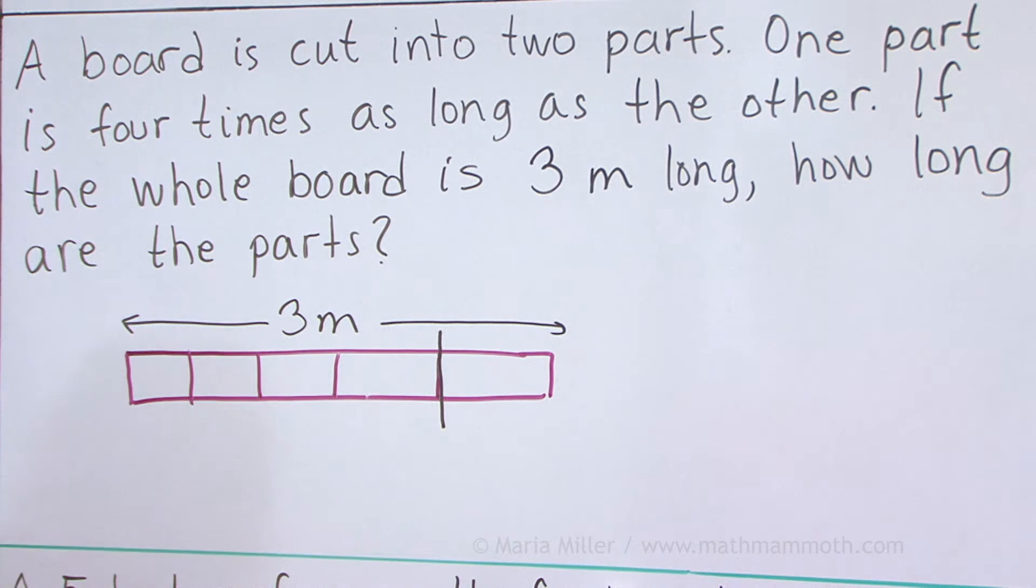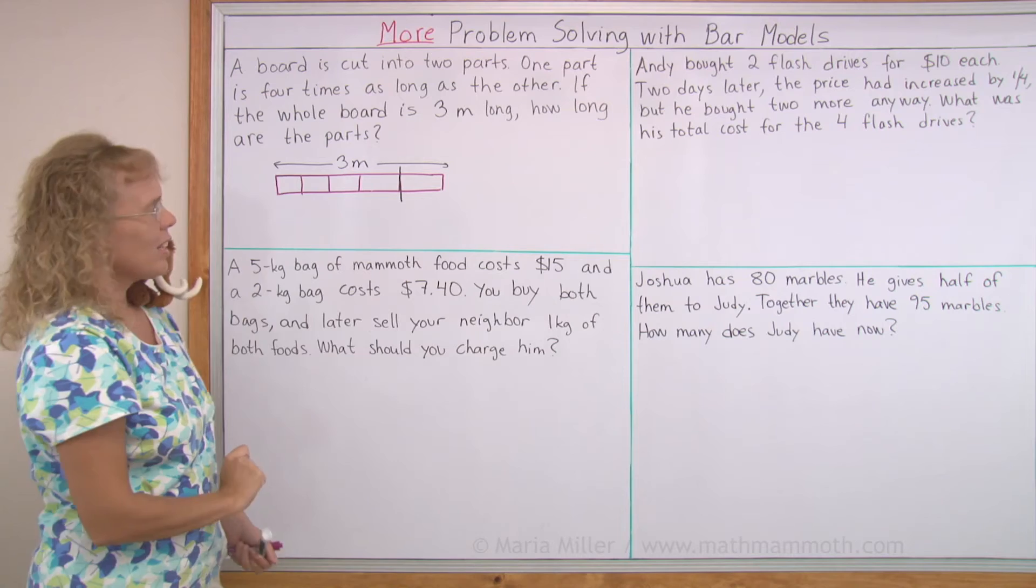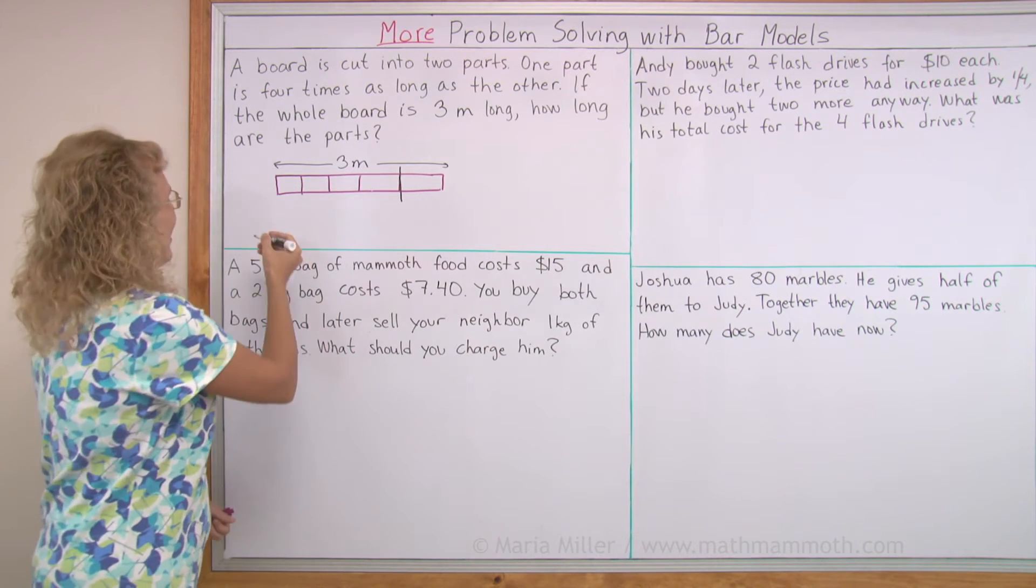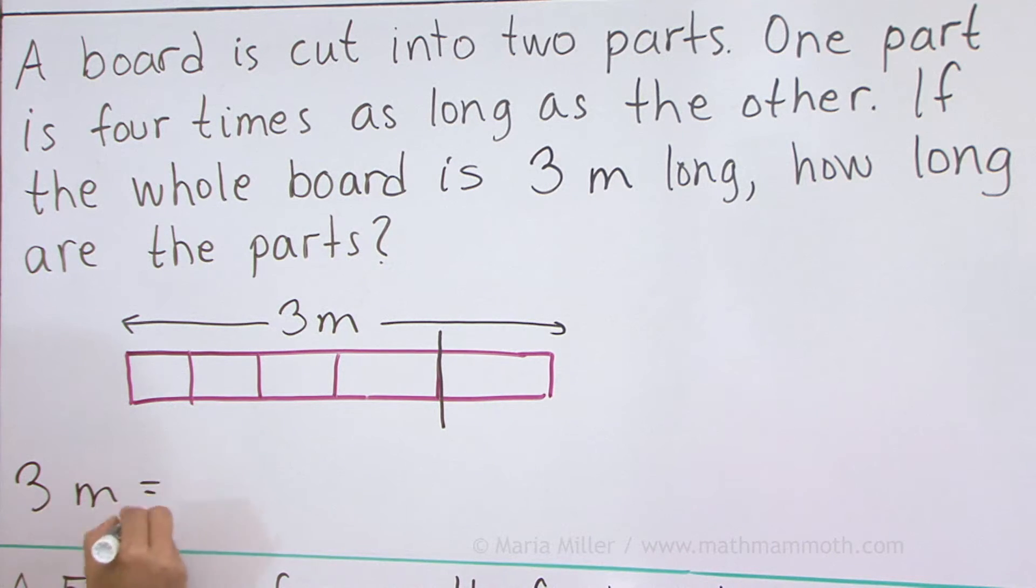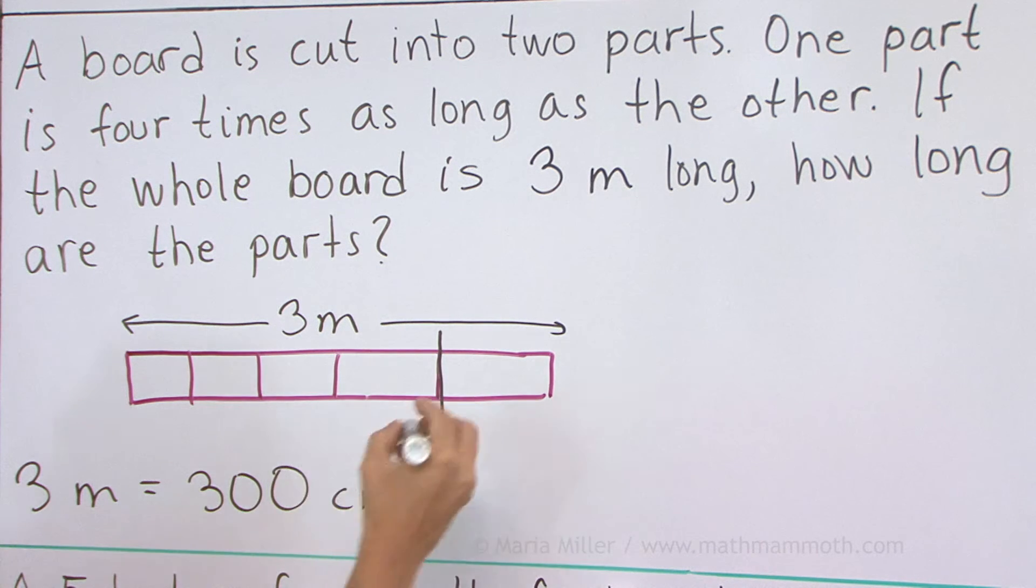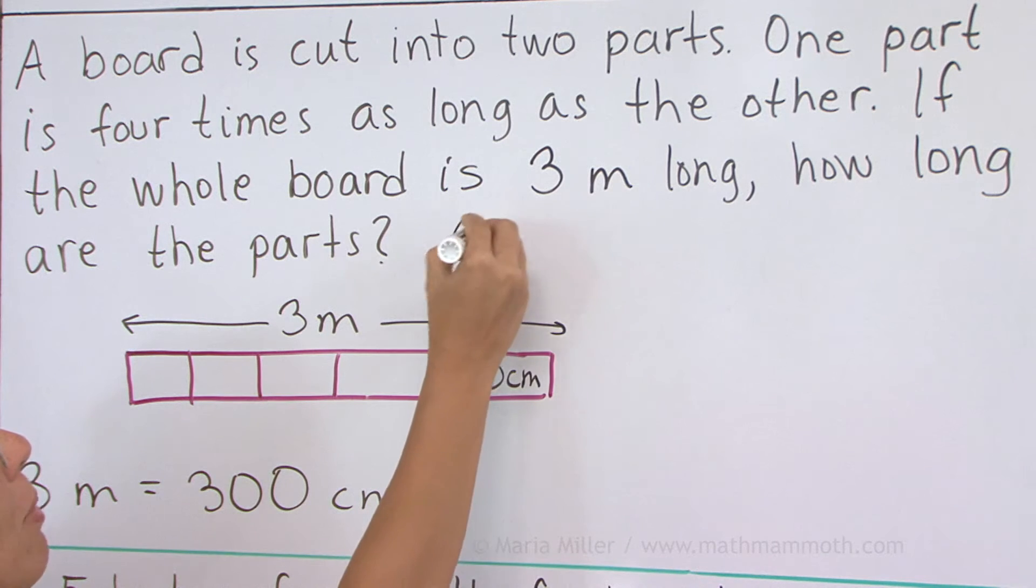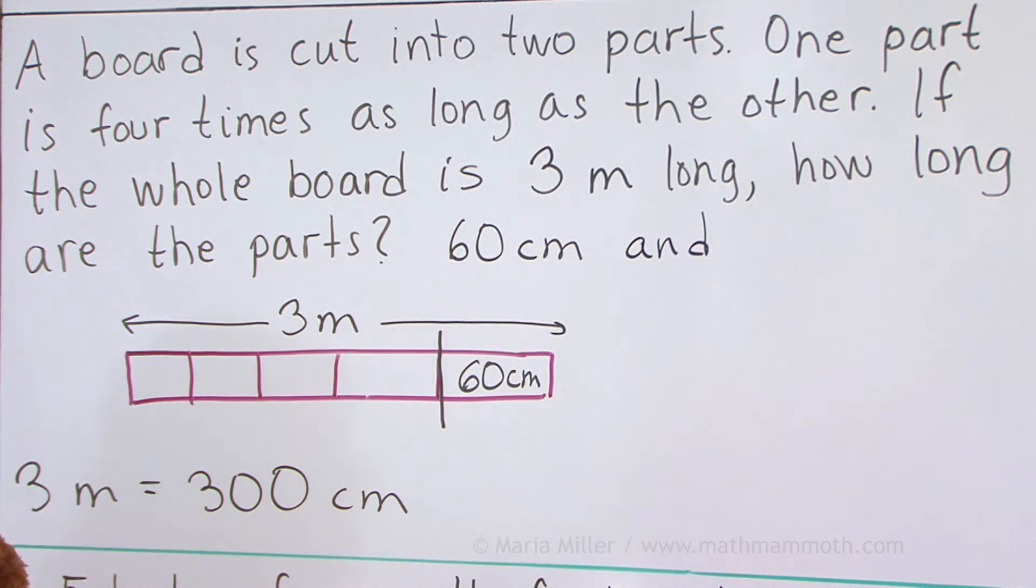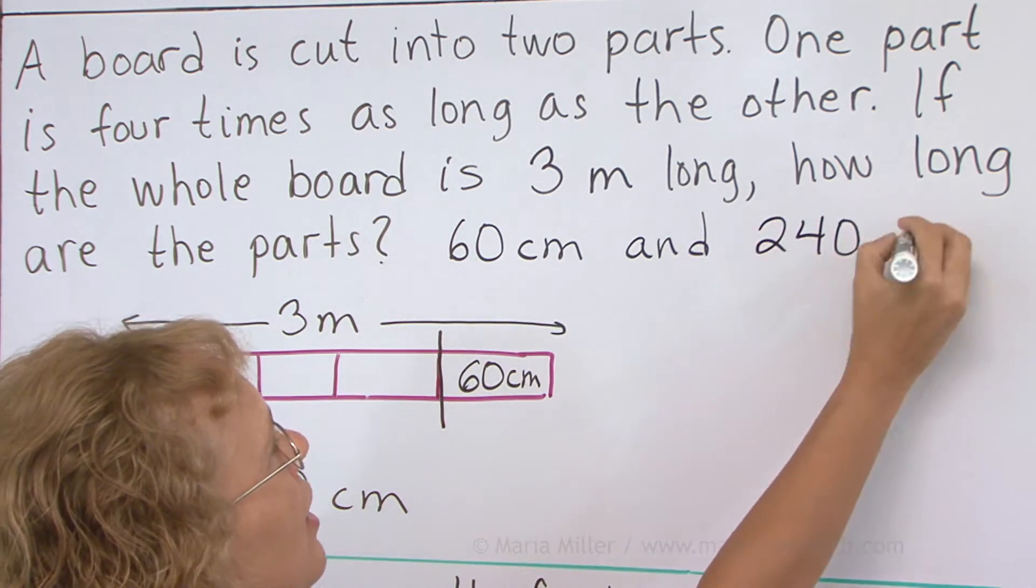And to solve it, we just need to find three meters divided by five. And then we get to the length of this one part. Three meters divided by five. How would we do it? It will help tremendously if we change it into centimeters, right? Three meters, 300 centimeters. And then 300 centimeters divided by five gives us 60 centimeters here. So one part is 60 centimeters, and the other four times that, or 240 centimeters.